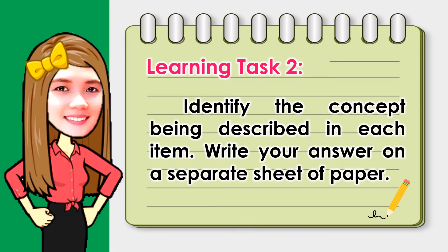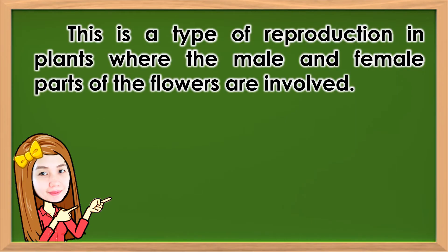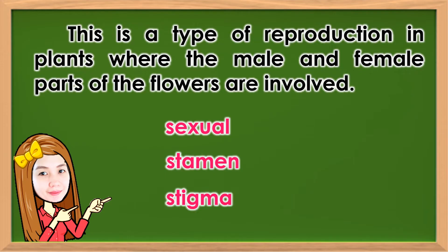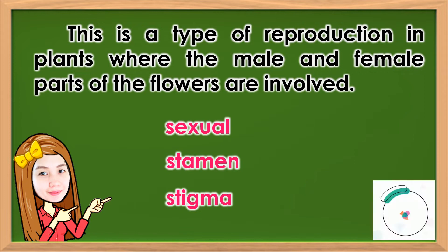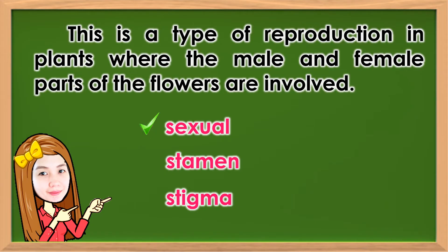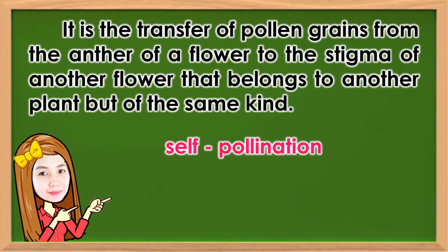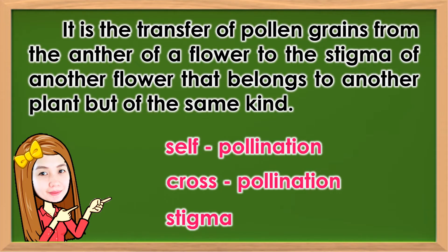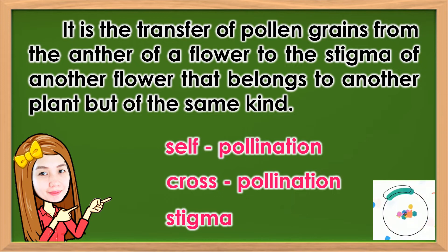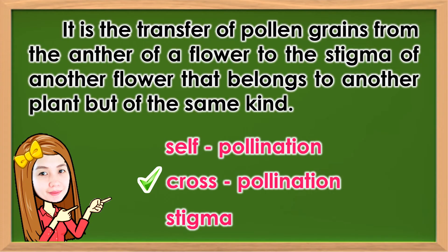Now it's time for the next activity. Identify the concept being described in each item. Write your answer on a separate sheet of paper. This is a type of reproduction in plants where the male and female parts of the flowers are involved. The correct answer is sexual. It is the transfer of pollen grains from the anther of a flower to the stigma of another flower that belongs to another plant but of the same kind. The answer is cross-pollination.